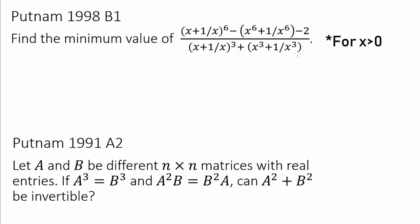The first thing we see when we look at this expression is that there are lots of symmetry inside it. We have this x plus 1 over x to the 6 and we also have the same thing cubed. We have x cubed plus 1 over x cubed and we have x to the 6 plus 1 over x to the 6.